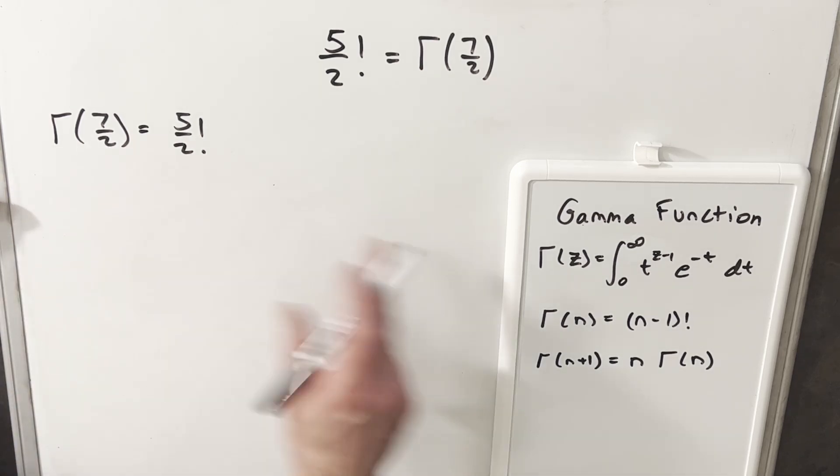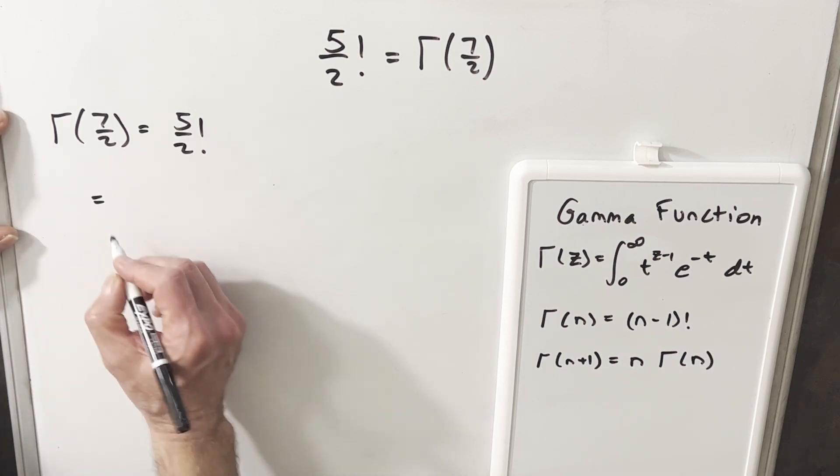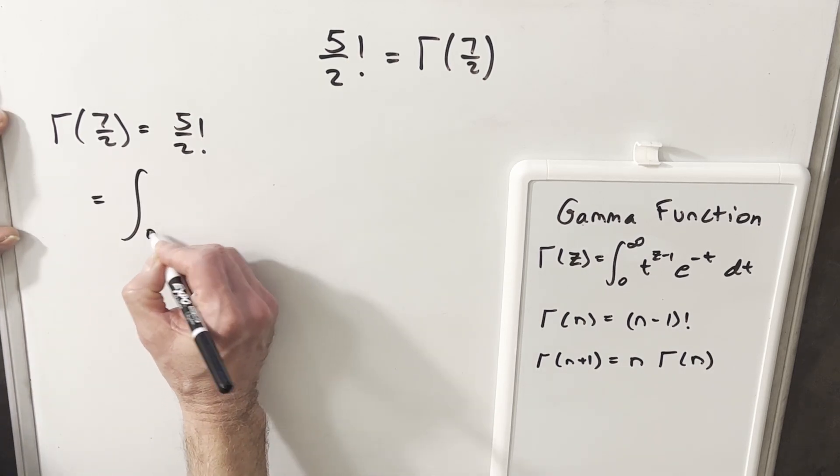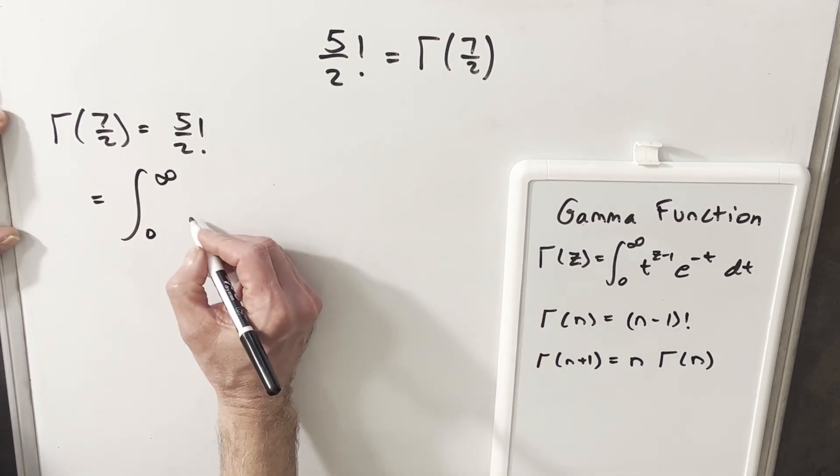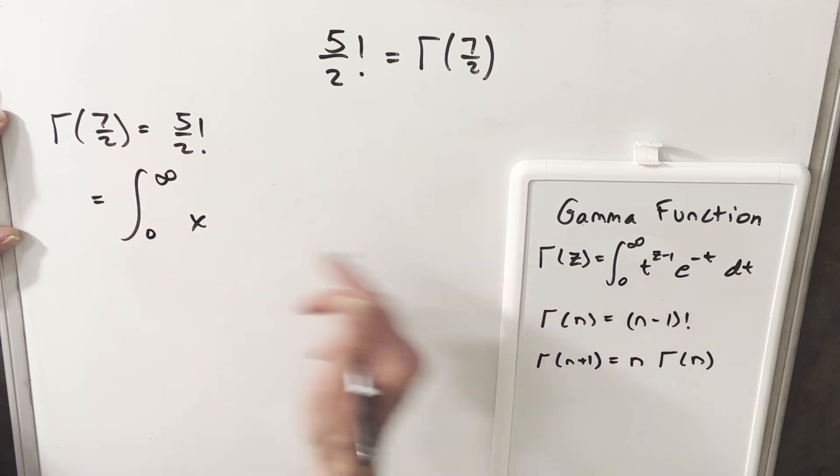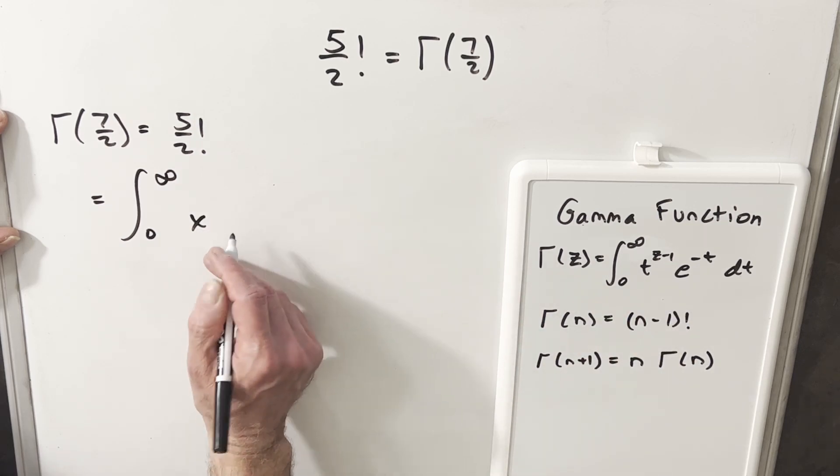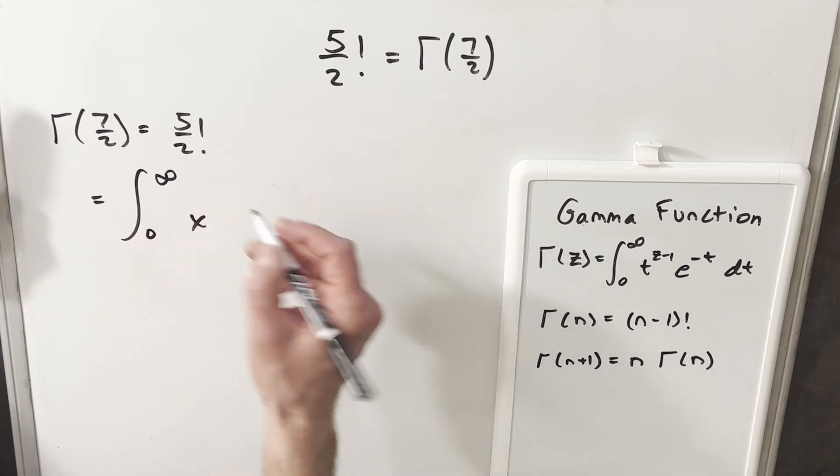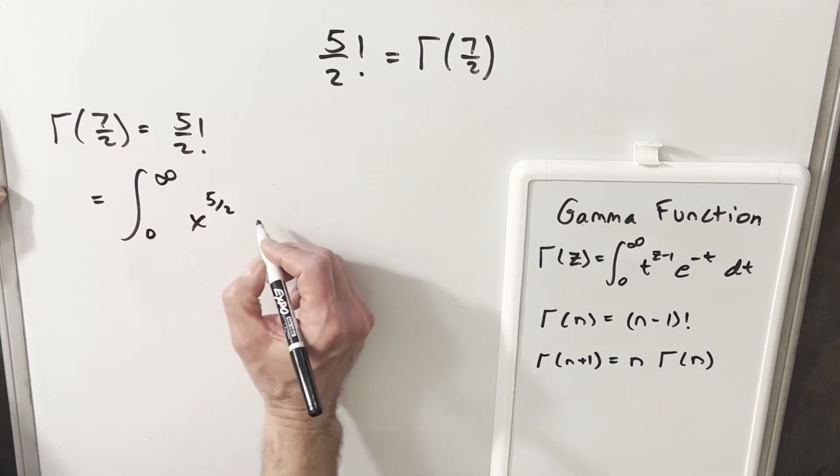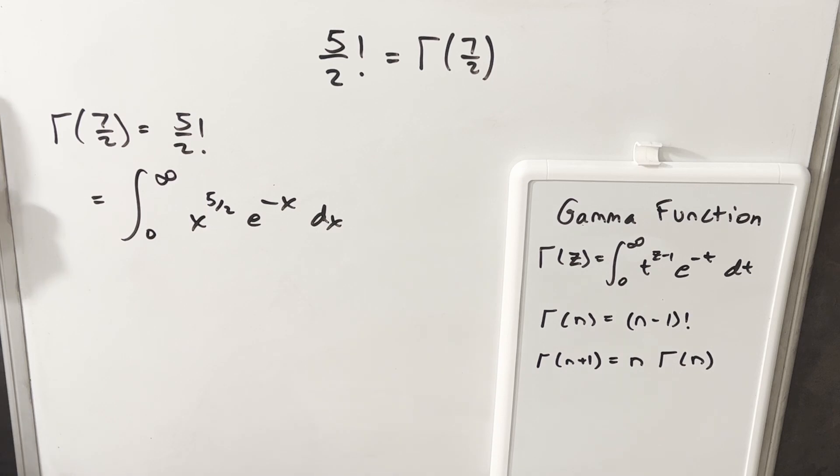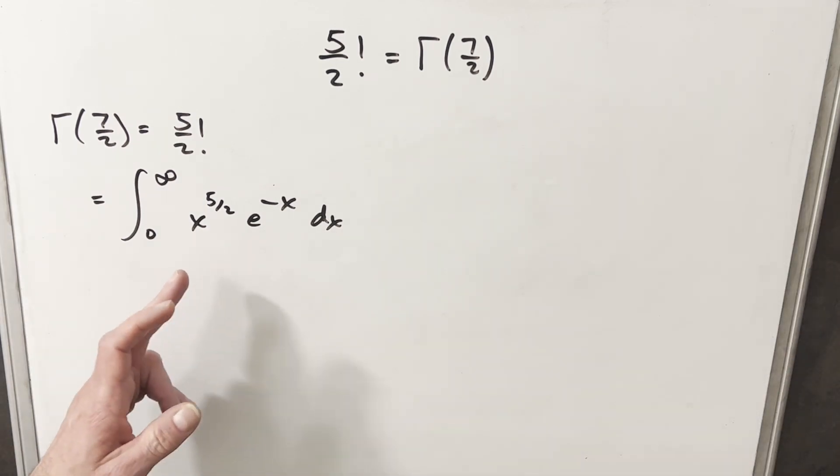So what we can do is we're looking for gamma of seven halves. We'll use our integral formula here. So we're looking for an integral from zero to infinity of x. Instead of t, I'm going to use x. We're going to have x to the seven halves minus one, which is five halves, e to the minus x, dx.